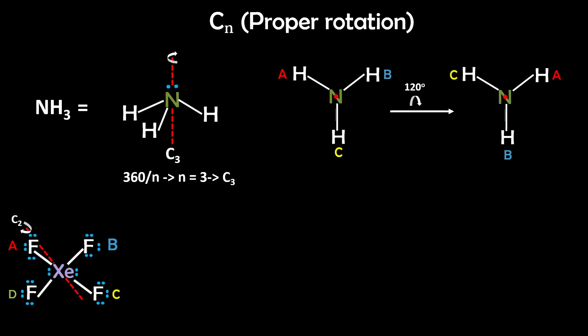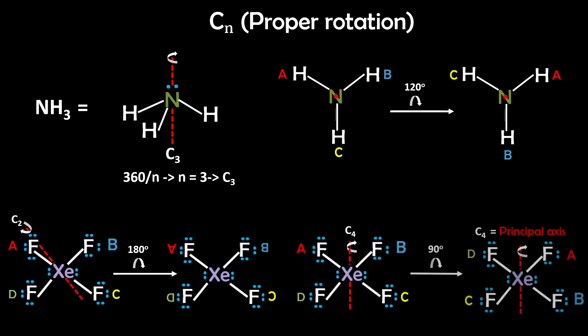For example, xenon tetrafluoride can rotate 180 degrees around the axis, so that's C2, but it also has a higher rotation axis, where you can rotate it by 90 degrees at a time, or four times in a full turn, and that's called a C4 axis. The rotation axis with the highest n value is called the principal rotation axis. So for xenon tetrafluoride, its principal axis is C4.